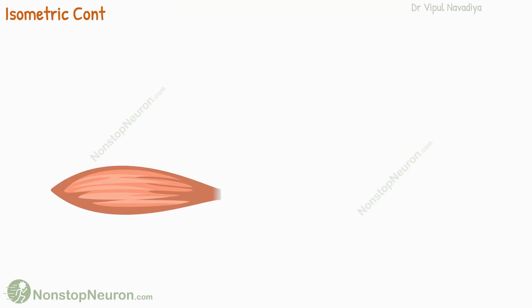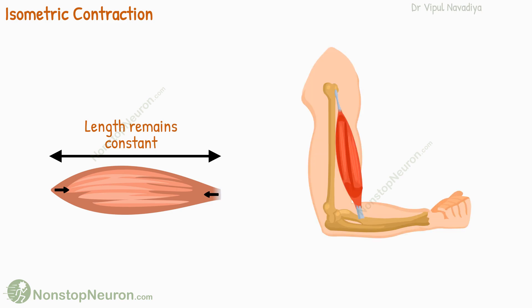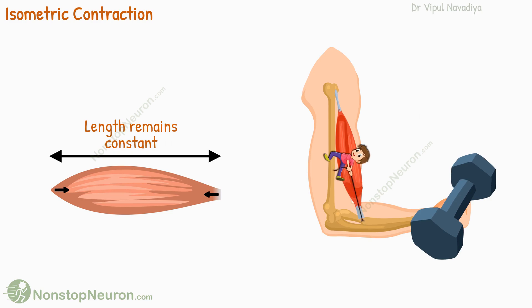In isometric contractions, the muscle generates force, but its length remains constant. For example, imagine yourself holding a dumbbell in a steady position. Your muscles are exerting force to keep the dumbbell up against gravity, but they are not changing their length. This is an example of an isometric contraction.